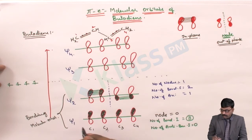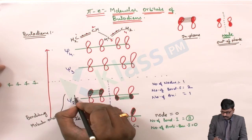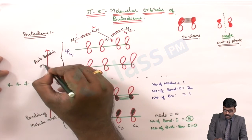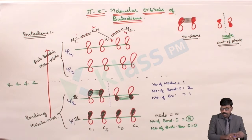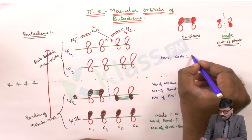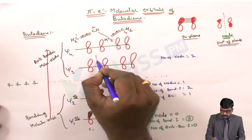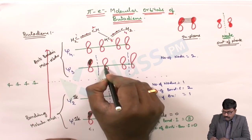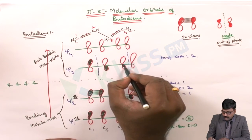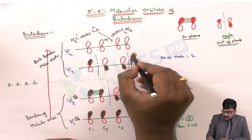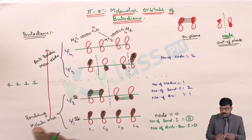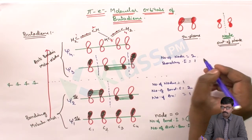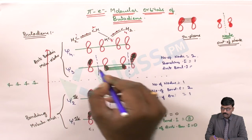For psi 3 with two nodes: we darken two lobes in the opposite sign and two in the same plane. These two are out of phase with the adjacent orbitals. So the bonding interaction will be only one, and the anti-bonding interactions will be two. Psi 3 and psi 4 are anti-bonding molecular orbitals.